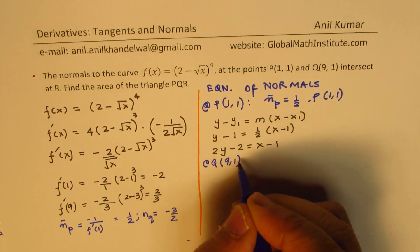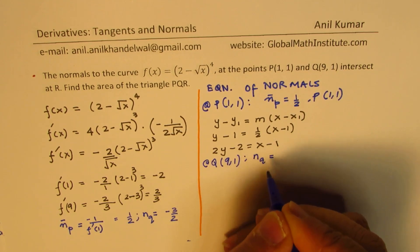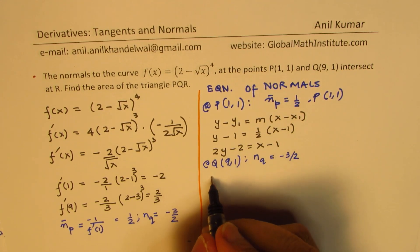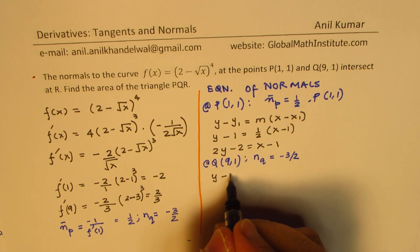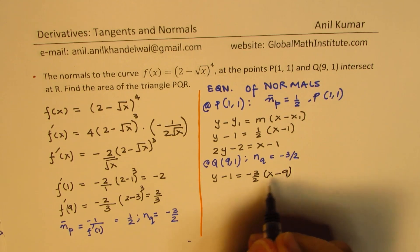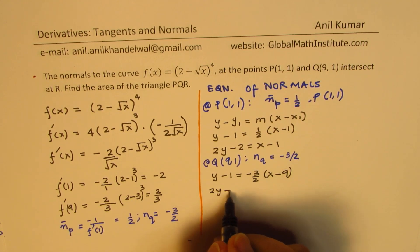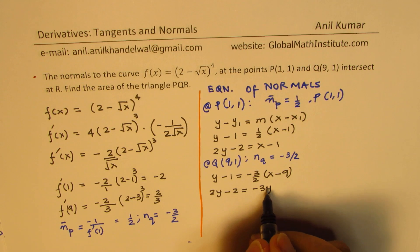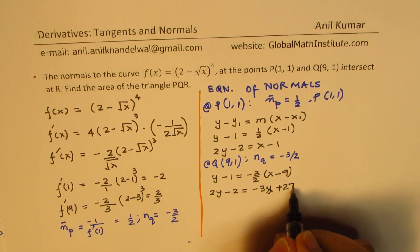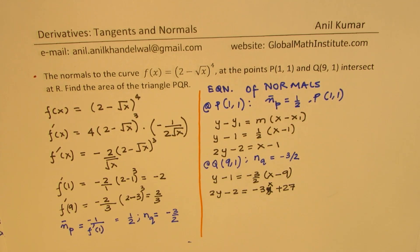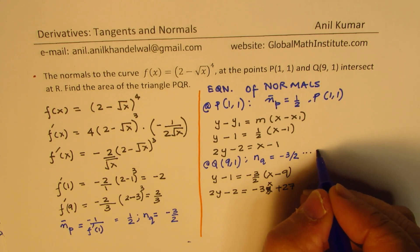Now let's find the equation of the normal at Q. Point Q is (9, 1) and the slope of the normal at Q is −3/2. So: y − 1 = −3/2 · (x − 9), giving 2y − 2 = −3x + 27.